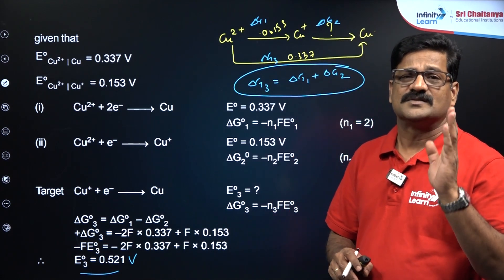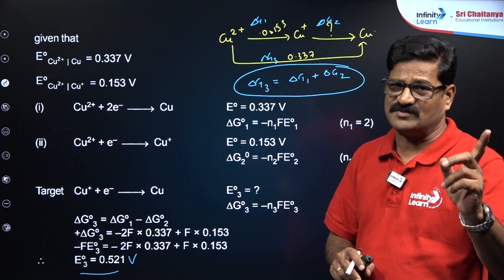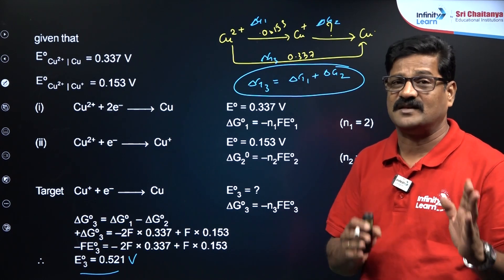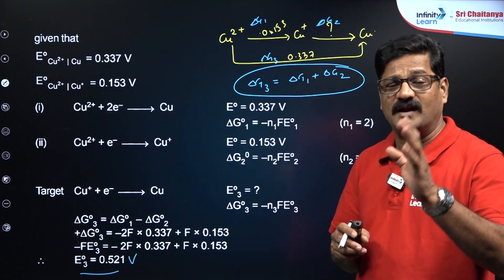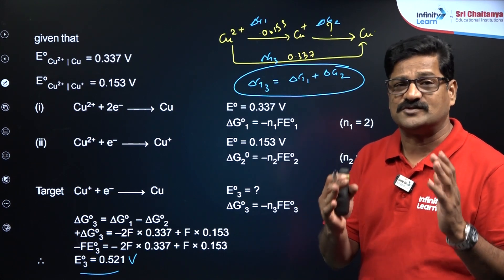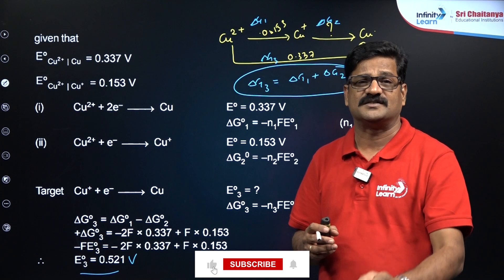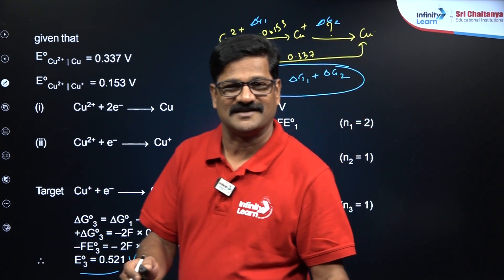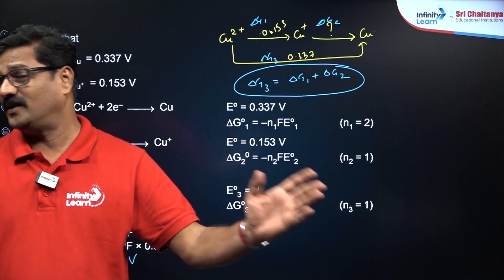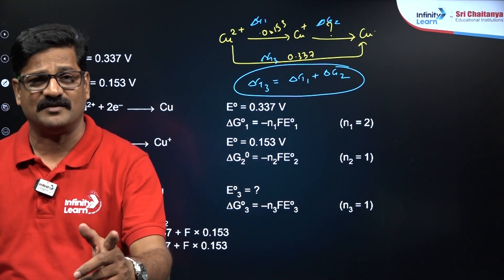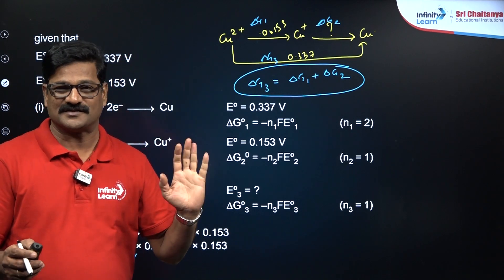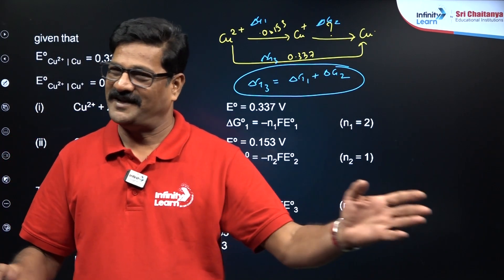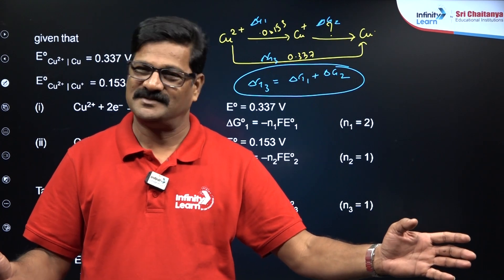So far this formula, in the NEET examination as well as other competitive examinations, 2-3 times the question has been asked. You can understand the importance of this formula. Just explore some more questions based on this particular Gibbs free energy change and electrode potential concept. Hope you enjoyed this class. Take so many questions from any material and you can solve it and try to grab 4 marks based on this question. Please like this session, share with your friends, and subscribe to Infinity Learn channel. Thank you very much.